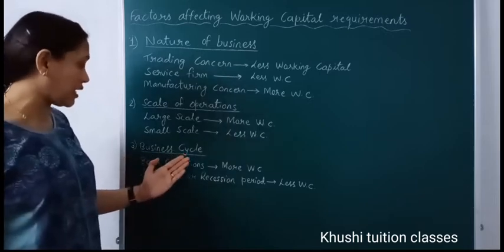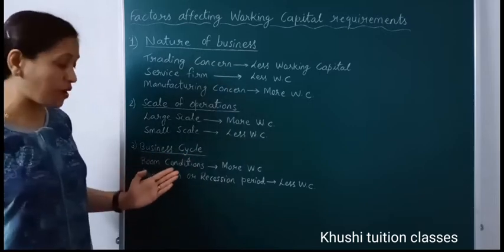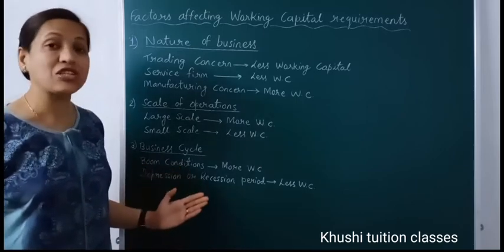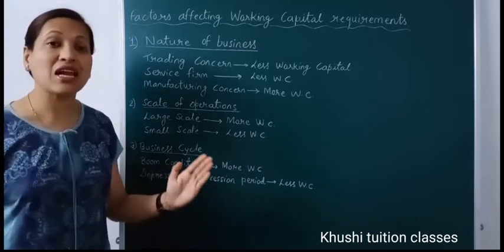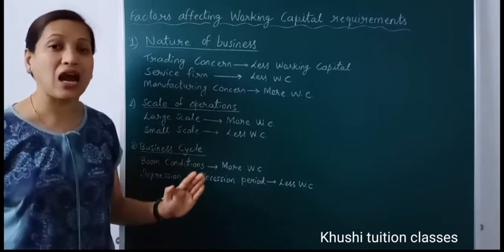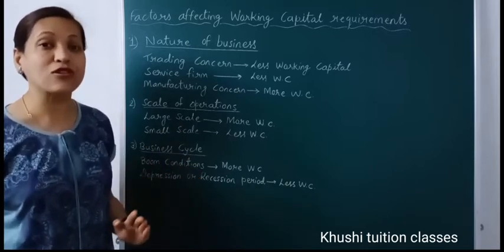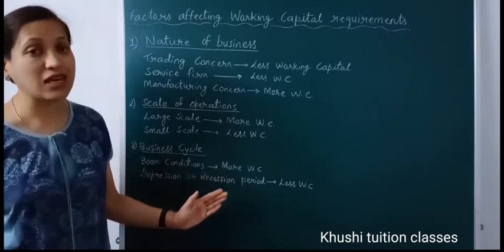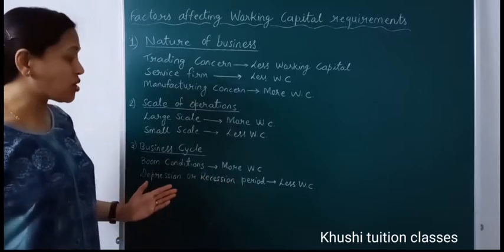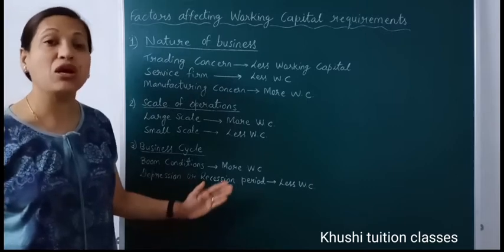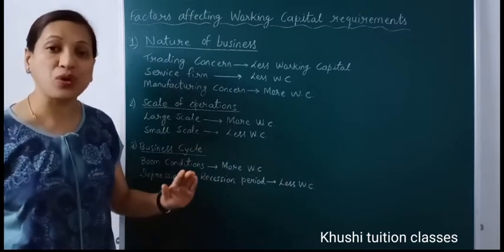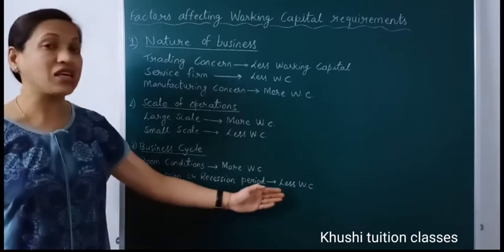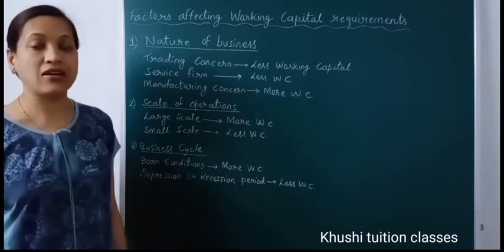The third factor is business cycle. Business can have a boom period or a depression period. Boom conditions mean production and sales are both very high, so the firm will need more working capital. But in a depression or recession period, production and sales are both low and customers are fewer, so working capital required will also be less.